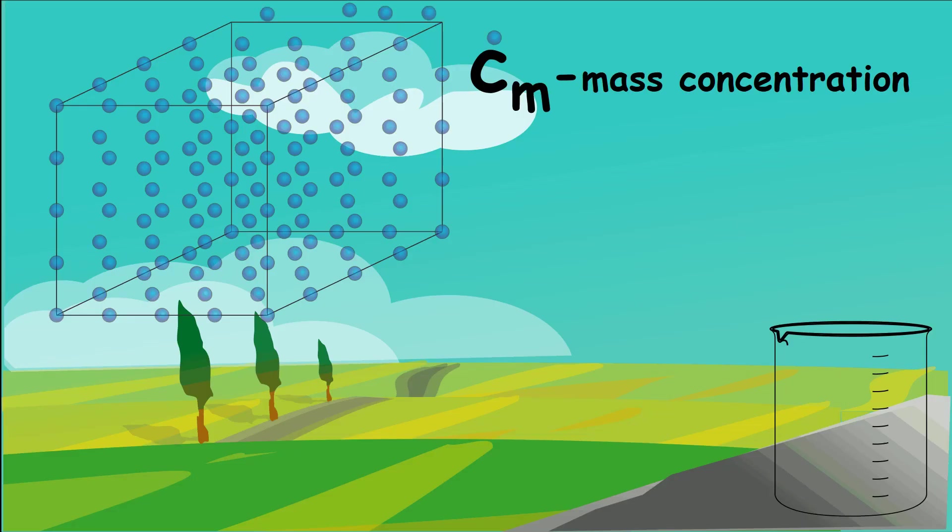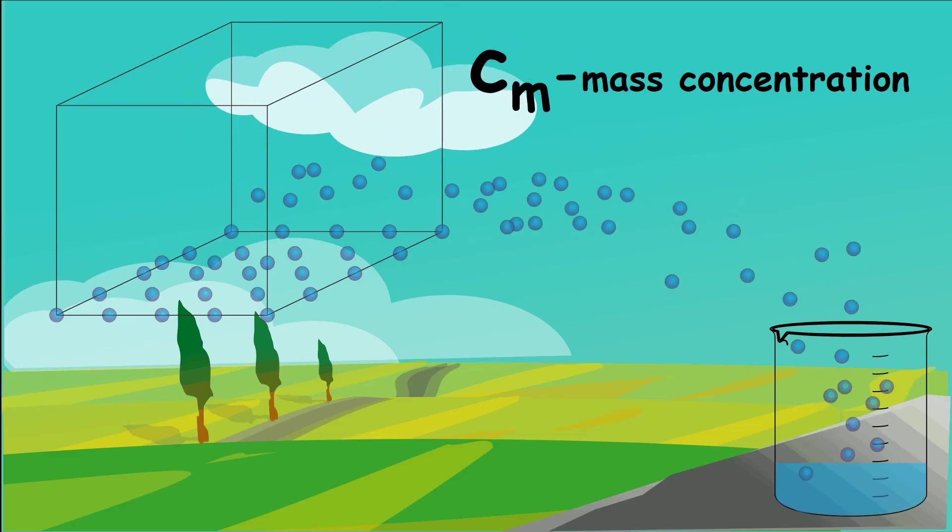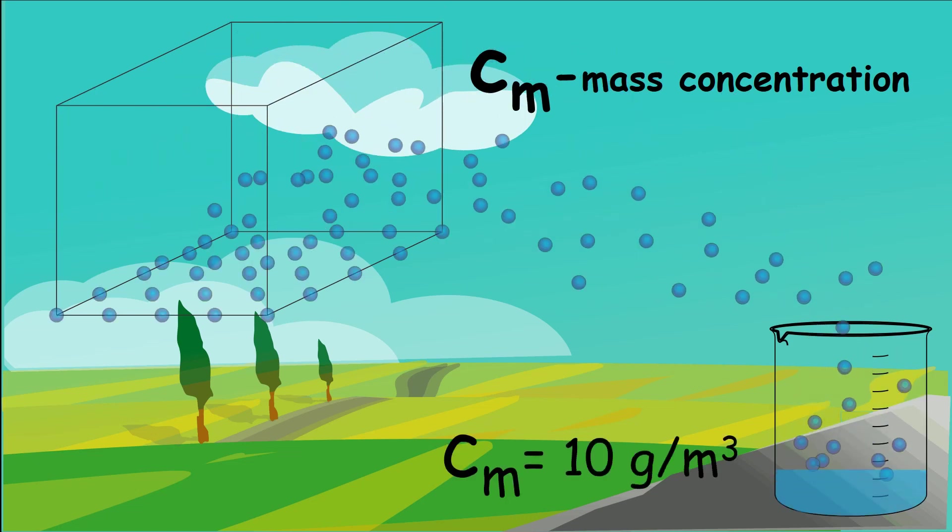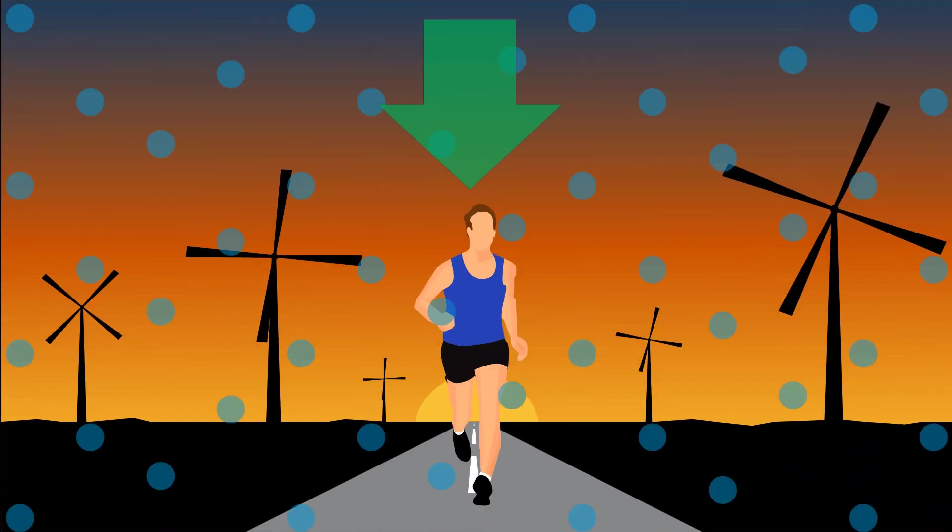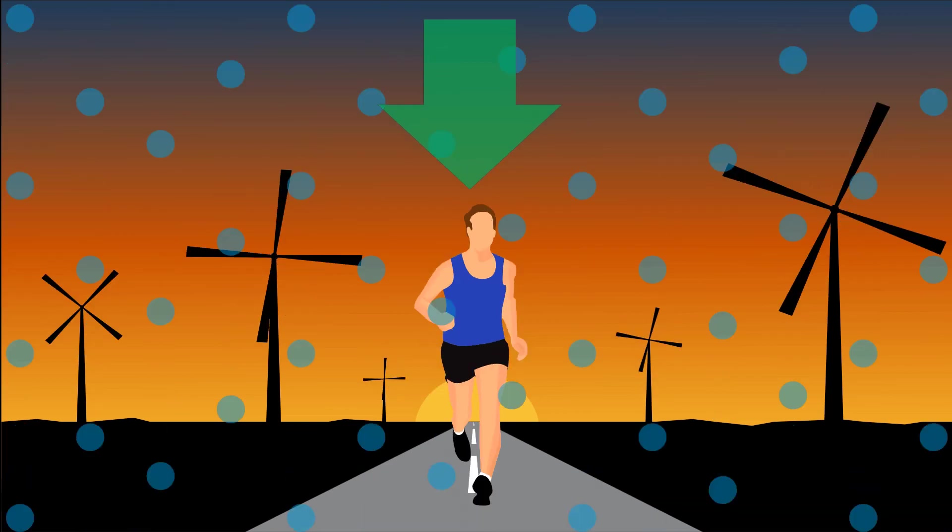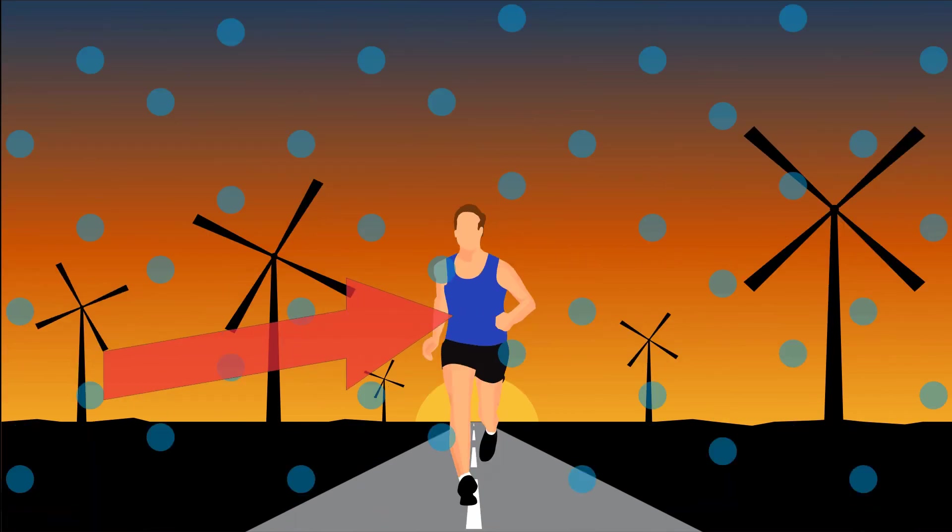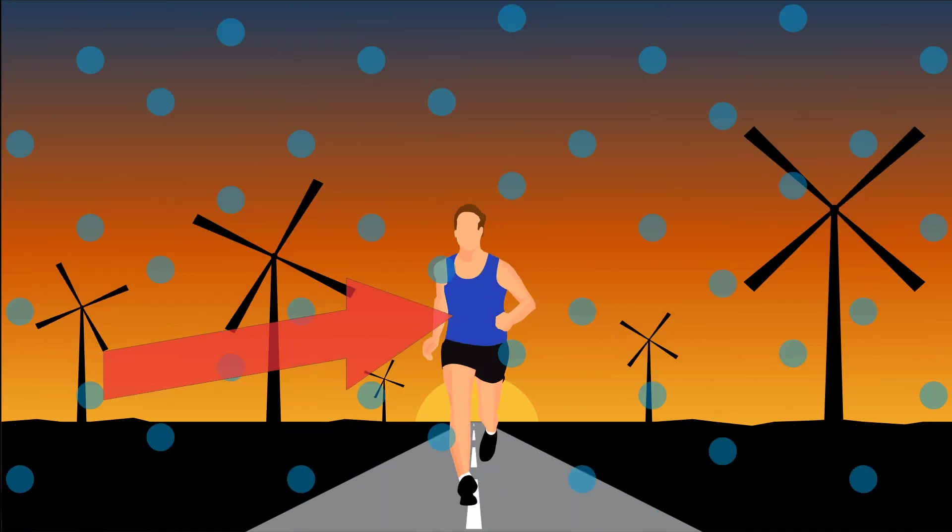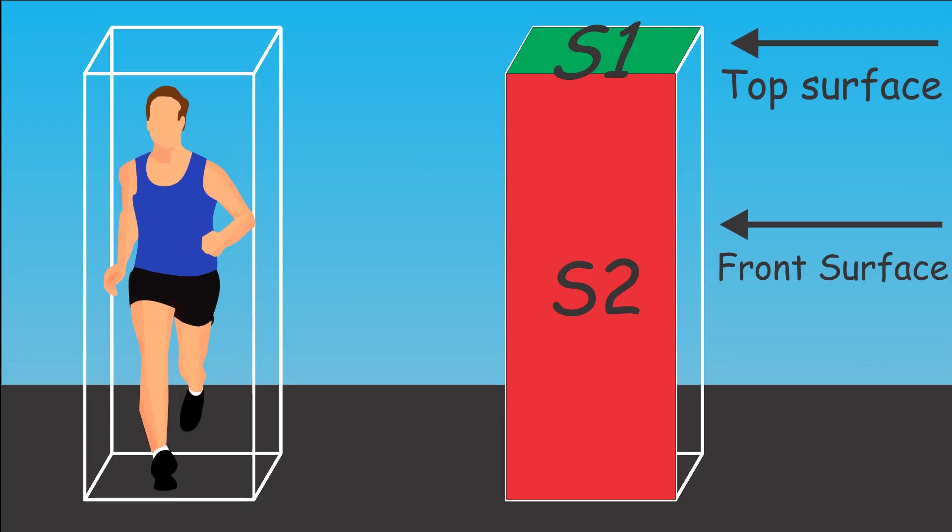For a stable rainfall we can define the mass concentration, which tells us how much rain contains one volume unit, for example 10 grams rain per cubic meter. We can divide our body surface in two parts, the top part that gets wet from rain falling down and the front part that gets wet just when we are moving or if there is wind. We can simplify the top and front surface with square areas of the same size.